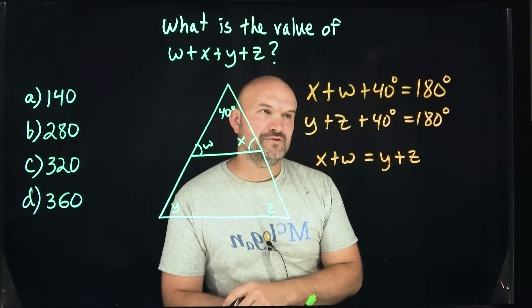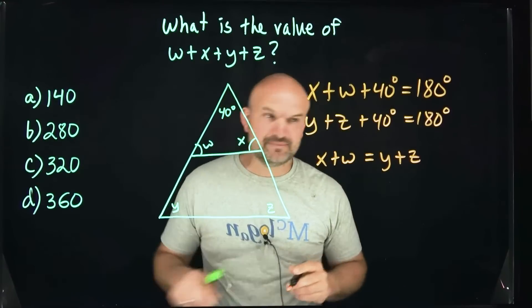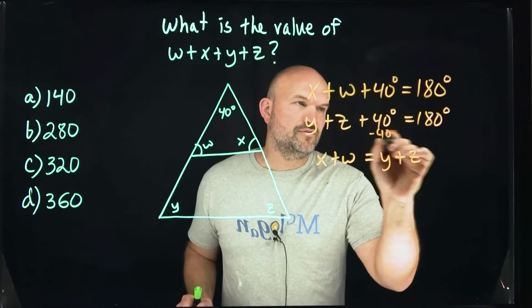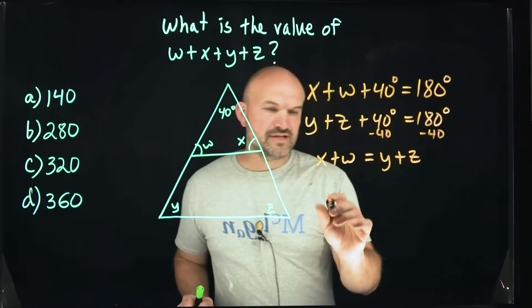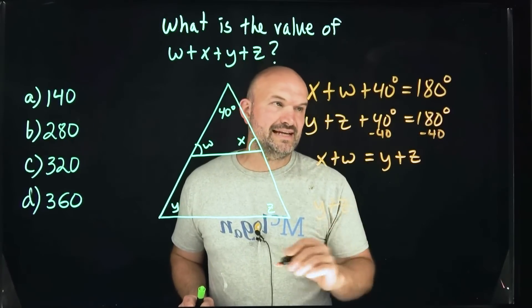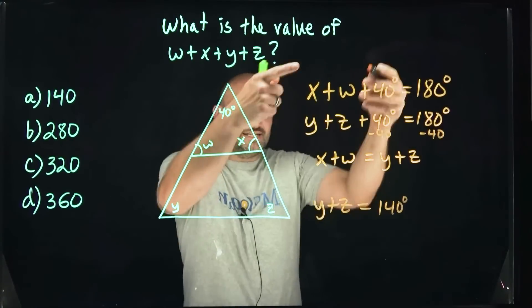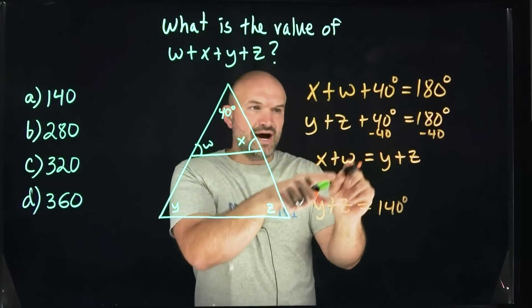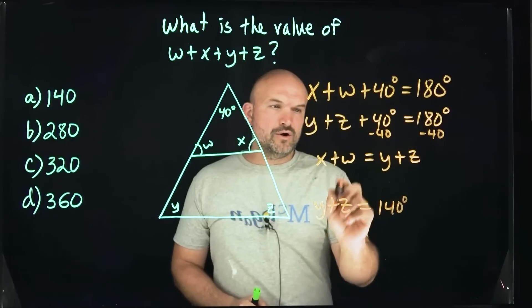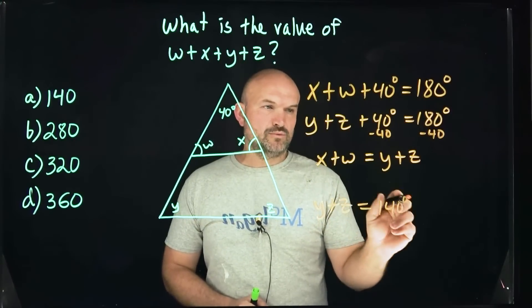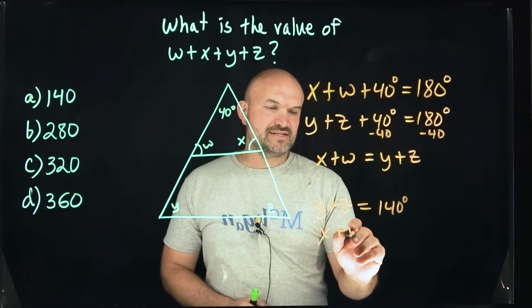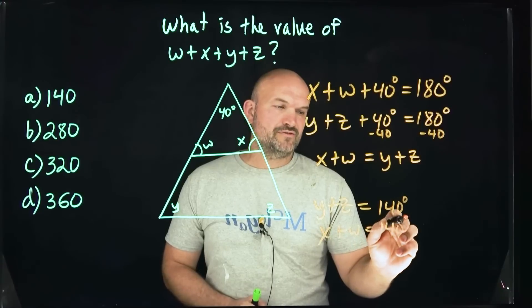And what is that missing value going to be? Or what is that sum going to be? Well, to do that, all we simply need to do is subtract 40 from one of our equations. And we can say y plus z is going to equal 140 degrees. And since we have x plus w equals y plus z, we know that also if y plus z is equal to 140, then x plus w is equal to 140 degrees.